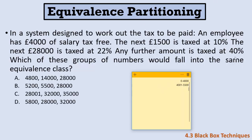The third partition: the next £28,000 is taxed at 22%, covering salaries from £5,501 up to £33,500. Any salary beyond £33,500 is taxed at 40% — that's the fourth partition, extending to infinity. So we have four partitions based on salary ranges with tax rates of 0%, 10%, 22%, and 40%.